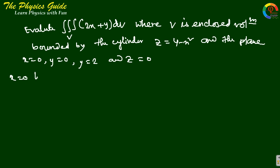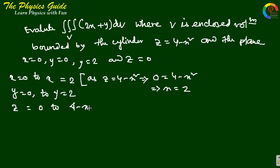When z = 4 - x² and z = 0, this implies x = ±2. So x ranges from 0 to 2, y from 0 to 2, and z from 0 to 4 - x².